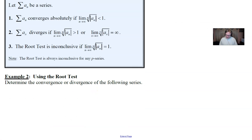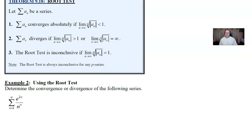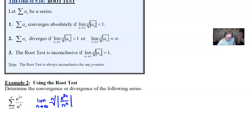Let's take a look at our example. There's that summation we want to look at — determine the convergence or divergence of the following series. I know it's likely you could use the ratio test for this and it would probably work, but let's use our brand new root test and see where it takes us. We're going to start by taking the limit as n approaches infinity of the nth root of the absolute value of e to the 2n divided by n to the nth power. Finish up the absolute value, move the nth root over — those are the first steps.